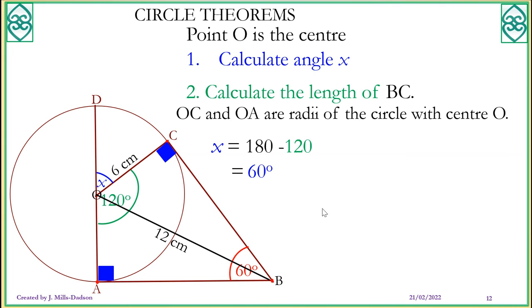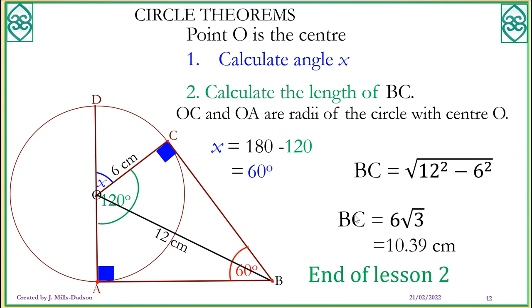We are supposed to work out line BC. And like I said, OCB is a right angle triangle. So that means it's Pythagoras question. And we are supposed to use the subtraction rule because it's not a hypotenuse. So BC is equal to square root of 12 squared, that's the hypotenuse squared, minus the other side 6 squared. And when you work it out, you get 6 root 3, to 2 decimal places 10.39 centimeters.